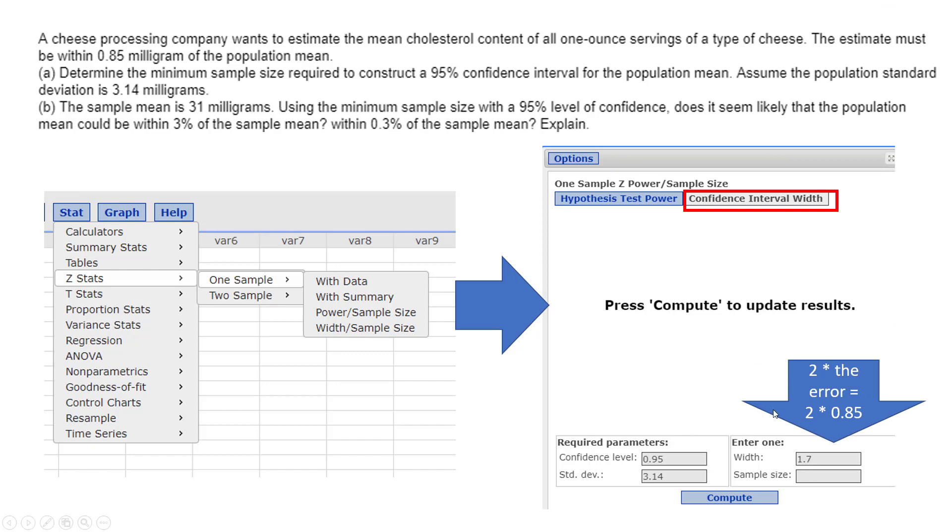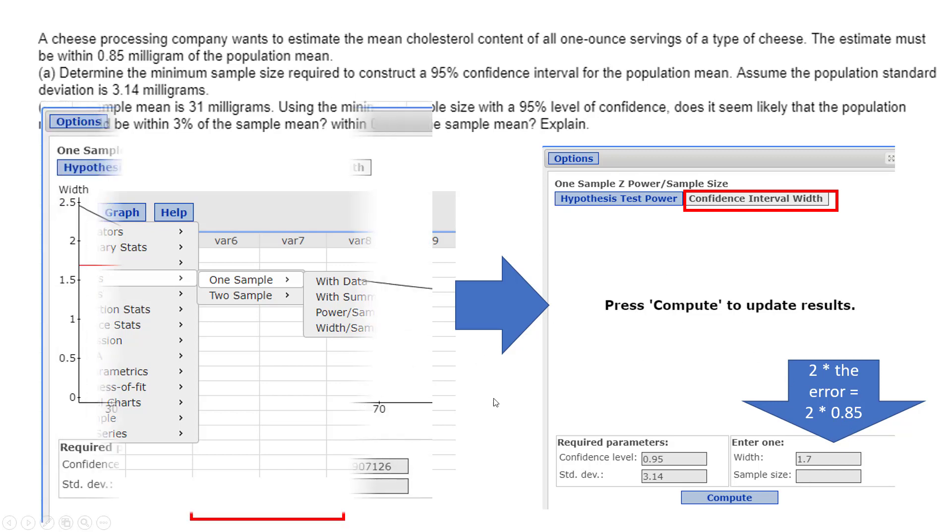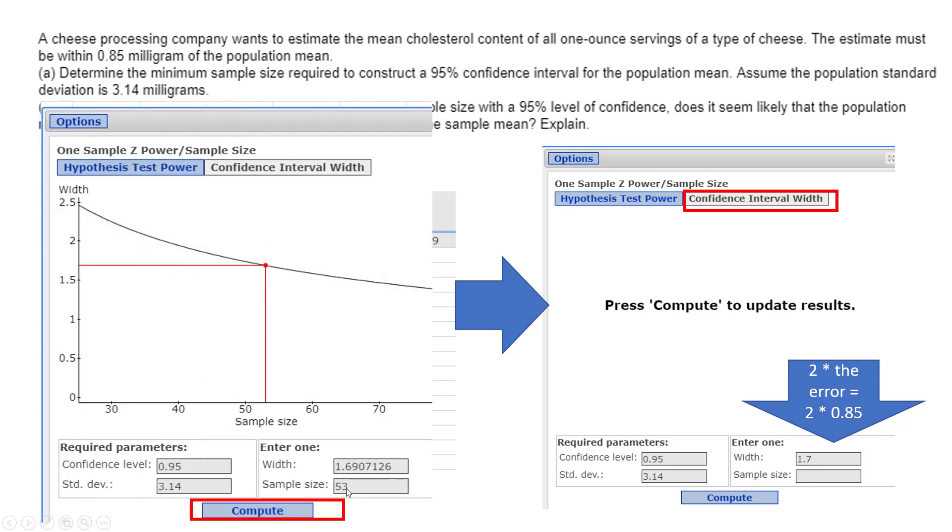The width, being a confidence interval, there's going to be a lower cutoff and an upper cutoff. So you take two times the error that they told you, and that's where the 1.7 comes from. You hit Compute, and guess what? You get 53 again. Don't worry about that, they change this to get us close to 1.7, but you get the actual same sample size.